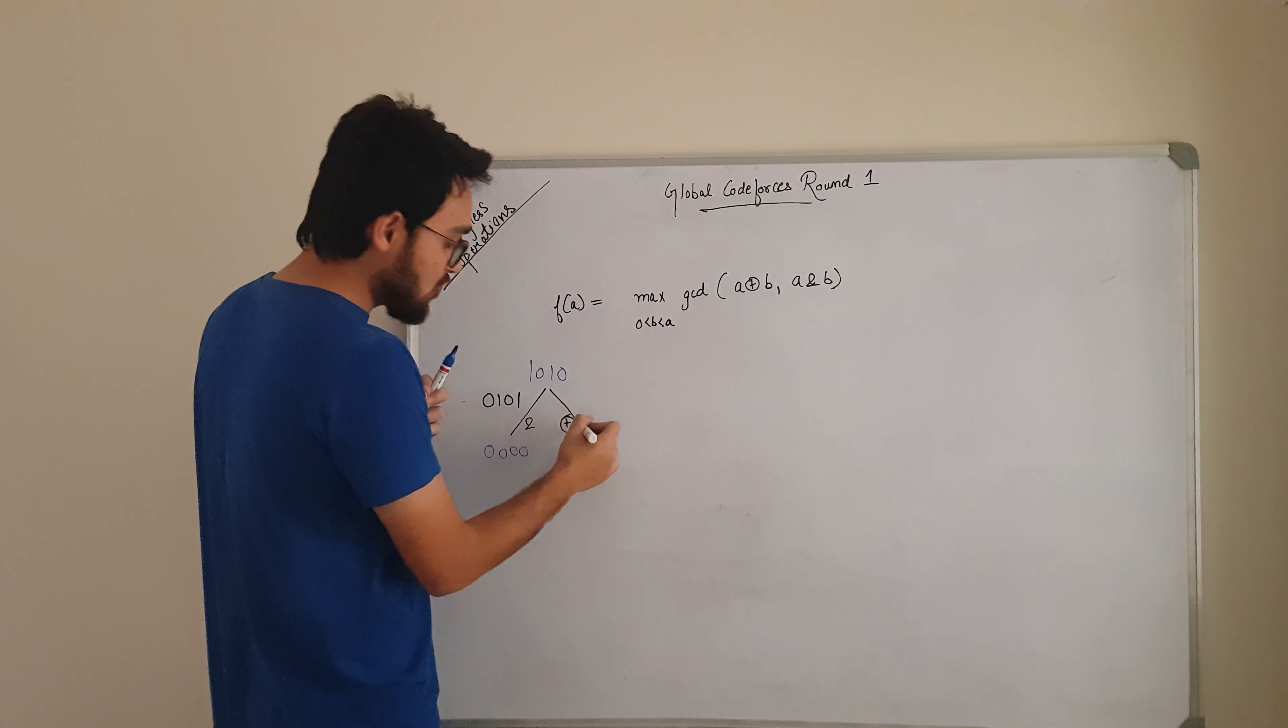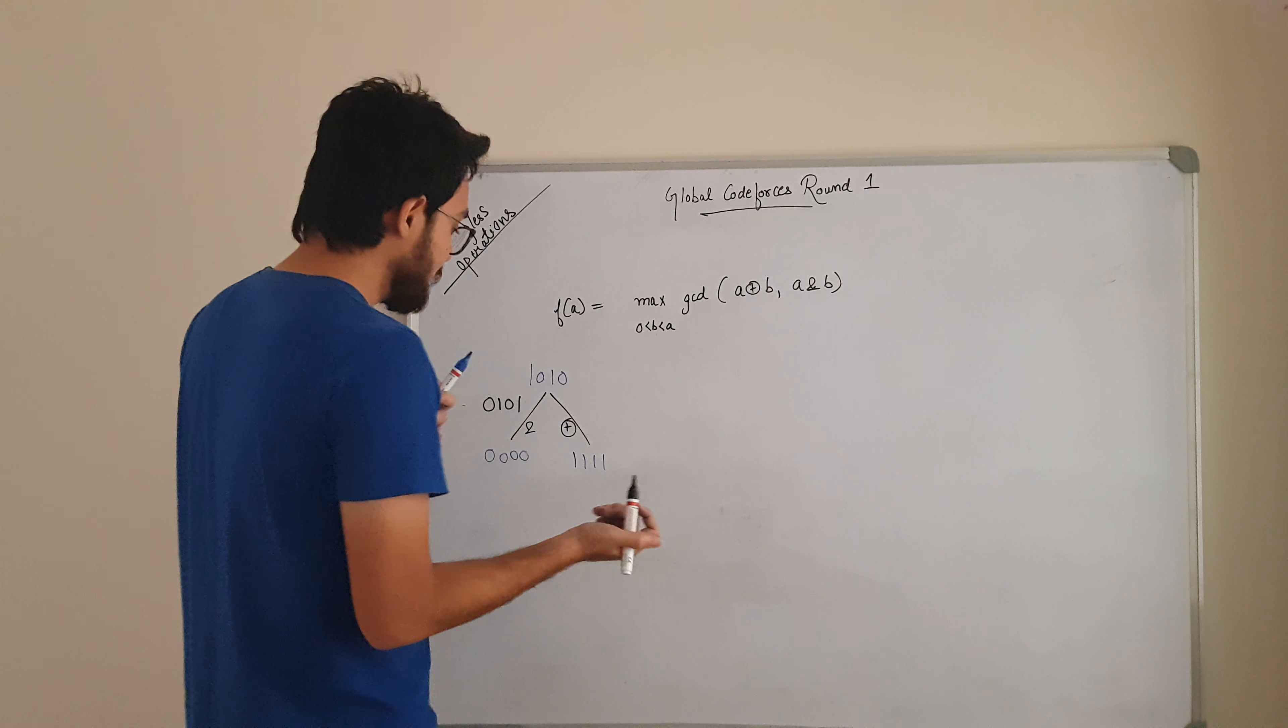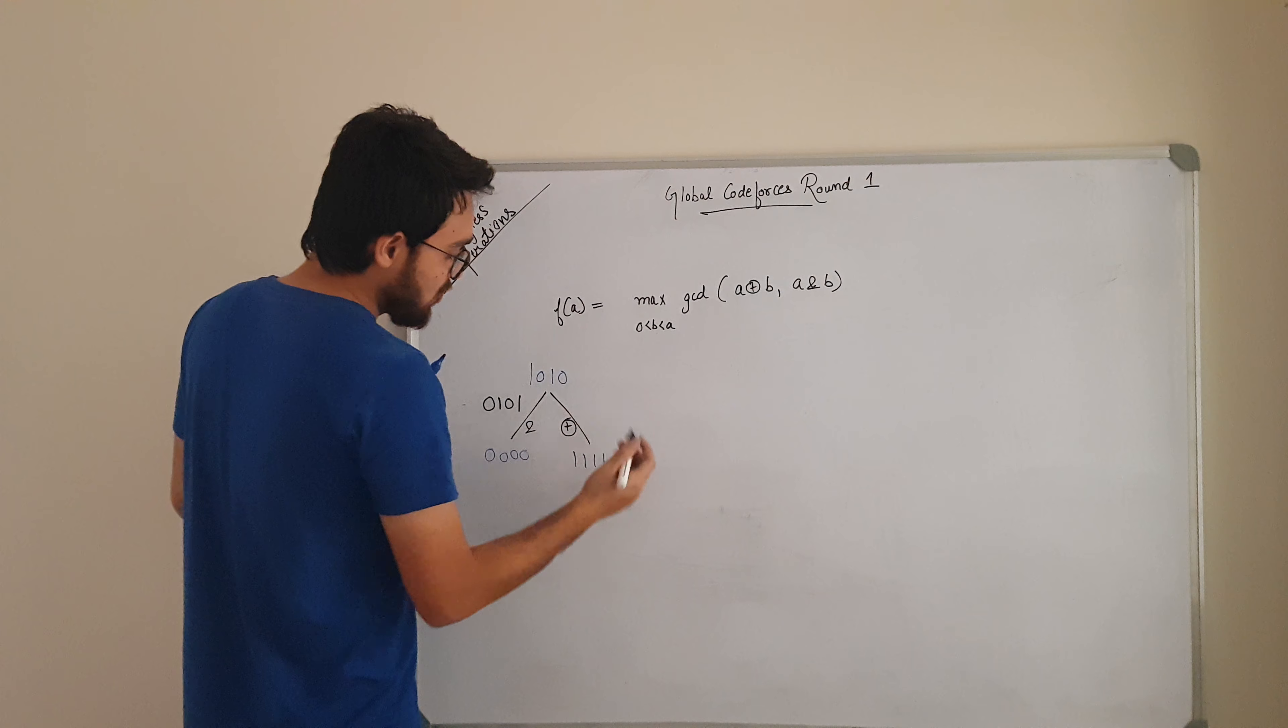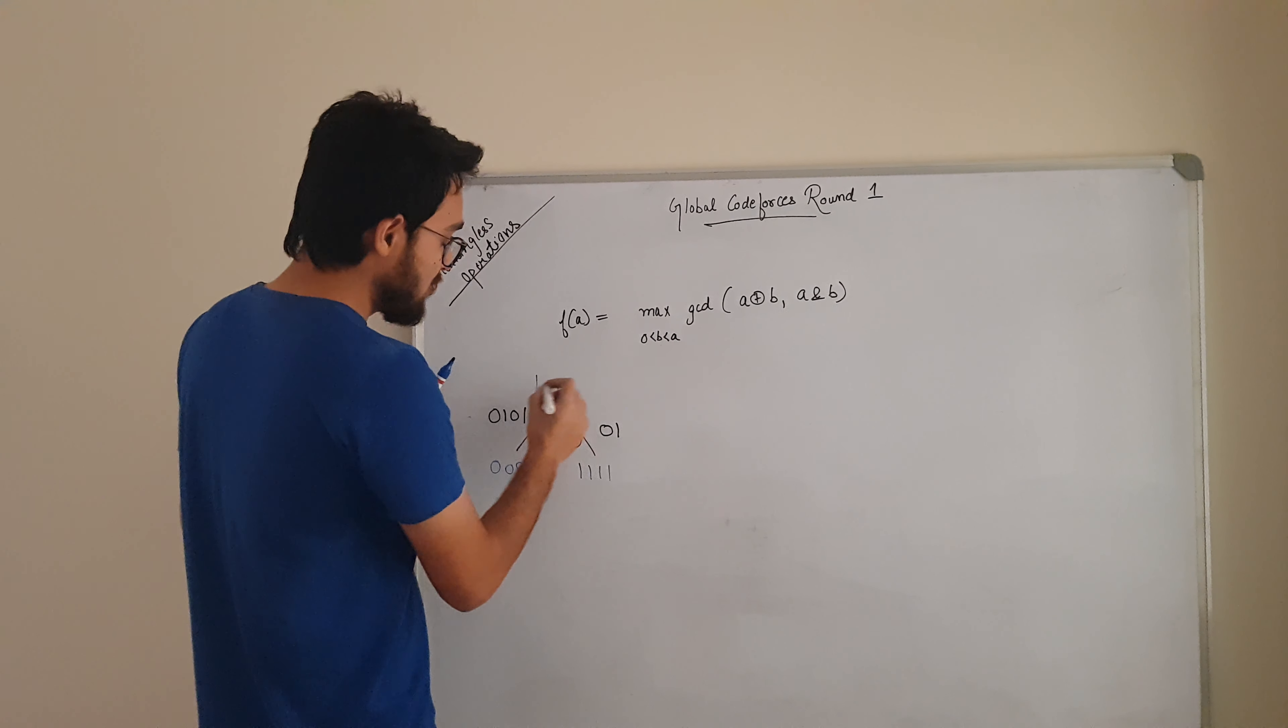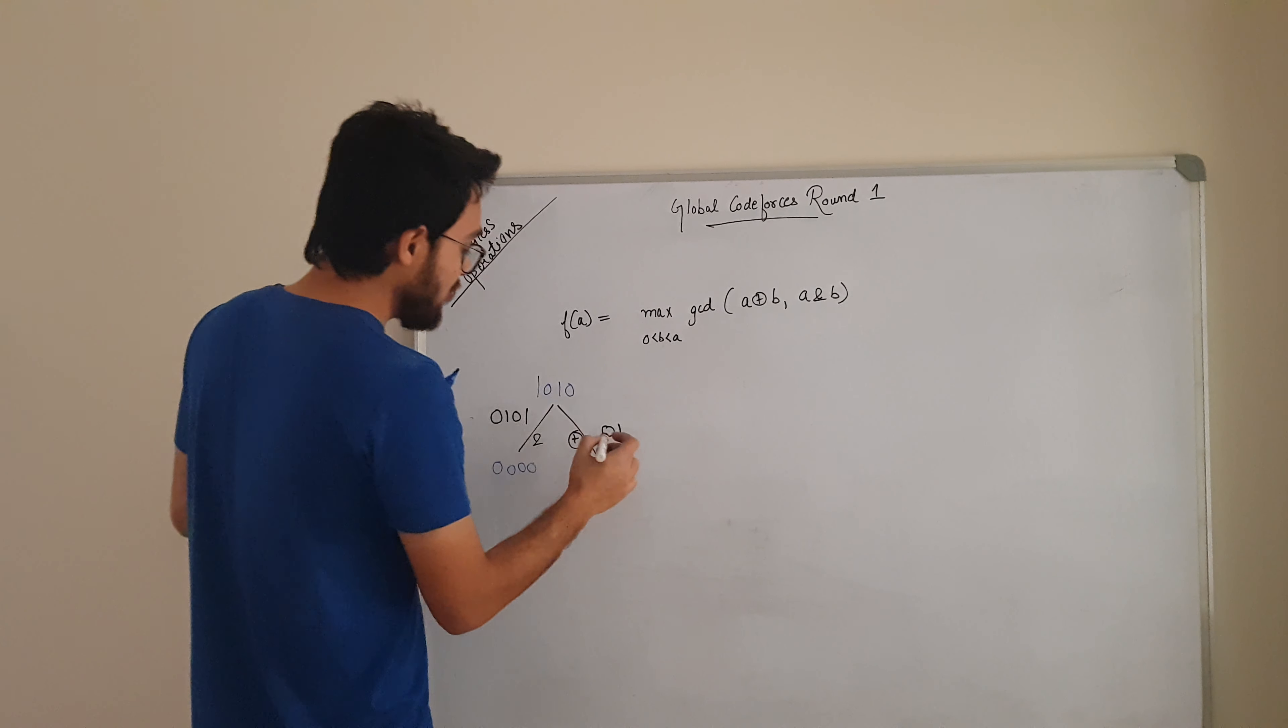Now to make this all ones using XOR, what my number will be? I want a 1 here, it was a 0, so I will write a 1. It was 1 here, I want a 1, so I will write a 0. It was 0 here, I will write a 1. It was 1 here, we want a 1, so I will write a 0 here.